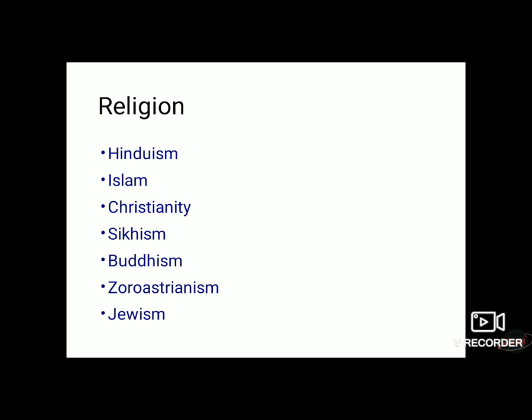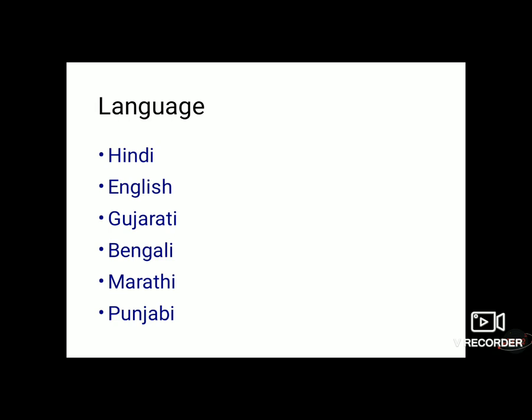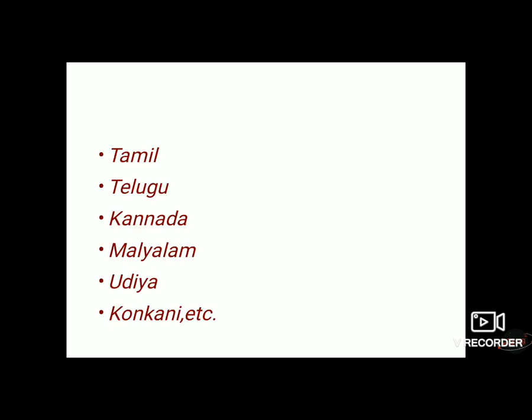Apart from religion, languages are also different in India. According to the Indian Constitution, 22 languages have been given standard status in our country. But apart from this, there are hundreds of languages and dialects used. The main languages are Hindi, English, Gujarati, Bengali, Marathi, Punjabi, Tamil, Telugu, Kannada, Malayalam, Odia, Konkani, etc. In spite of existing diversity in language, various languages have importance in maintaining the unity of our country. Hindi is our mother tongue and is spoken widely in India, while other languages are spoken in different regions.